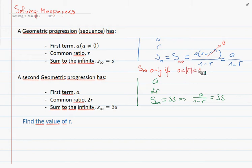This means that the sum to the infinity only applies when absolute value of r is less than 1.